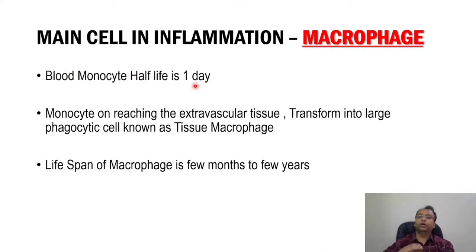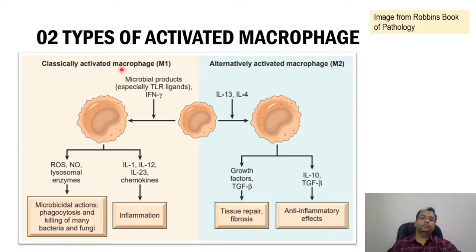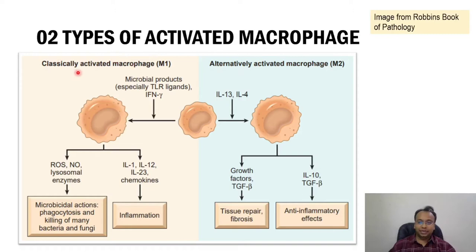Macrophage is of two types in chronic inflammation: activated macrophage and tissue macrophage. Activated macrophage again is of two types — classically activated macrophage or alternatively activated macrophage. The tissue macrophage resides in tissue. Activated macrophage can be divided into two categories: classically activated and alternatively activated.